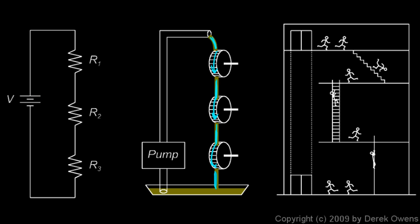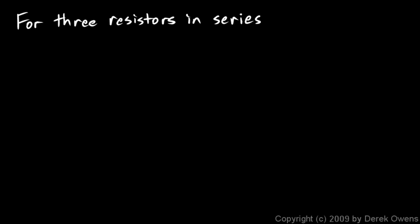So, if this was a 12 volt battery here, then we know that the voltage here, what we would call V1, and the voltage in this second resistor, what we would call V2, and the voltage in the third resistor, what we would call V3, that those three would have to add up to 12 volts. So, we can write this concept into our notes too. For three resistors in series, we know that the voltages must add up to the total.